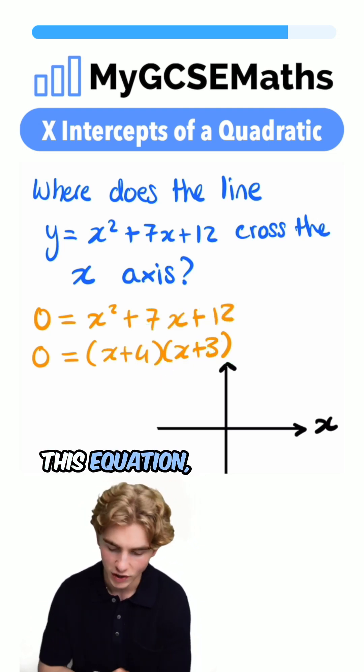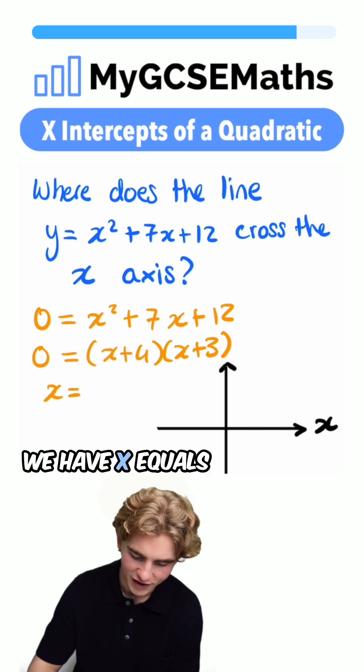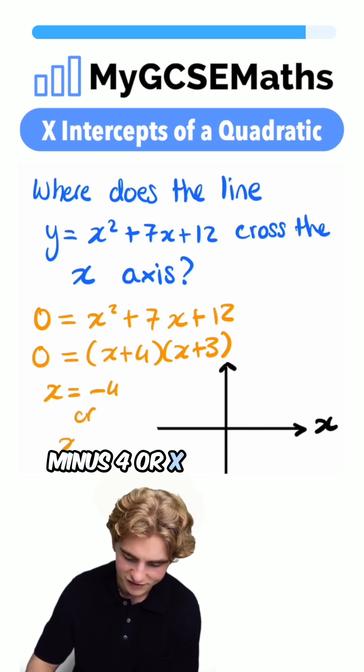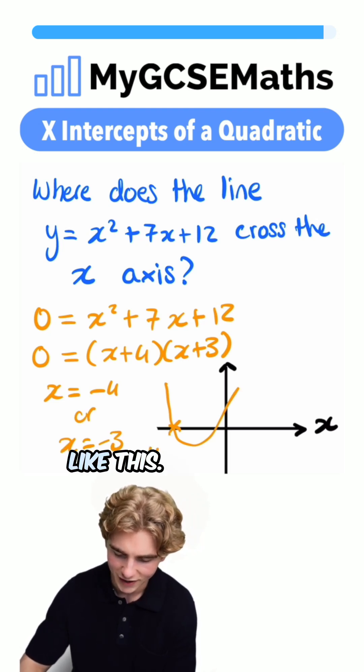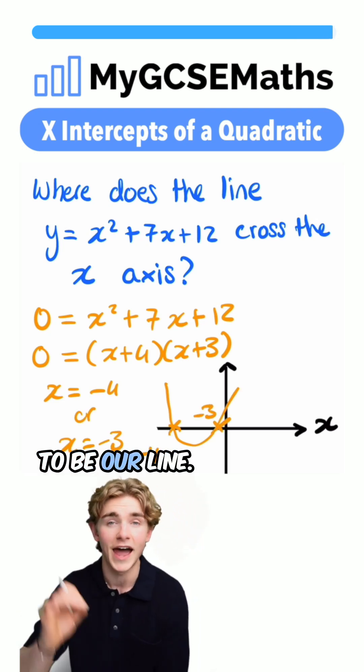Now to find the solutions to this equation, we just reverse the signs. We have x equals minus 4 or x equals minus 3. If we sketch this, it would look something like this. That is going to be our line.